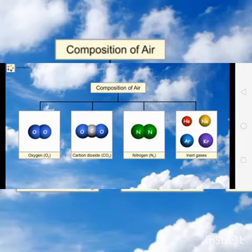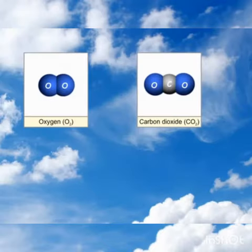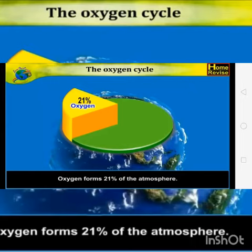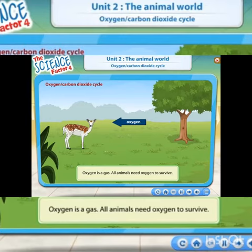The air around us is made up of many different gases like oxygen, carbon dioxide, nitrogen, and inert gases. Oxygen and carbon dioxide in particular are important for survival of all living organisms. In the atmosphere, 21% oxygen is present. Oxygen is a gas; all animals need oxygen to survive.